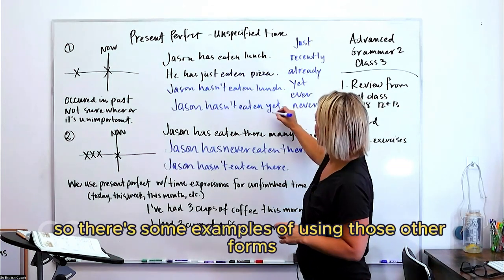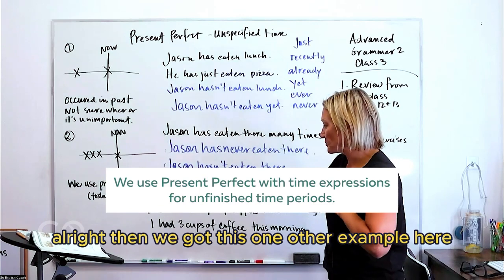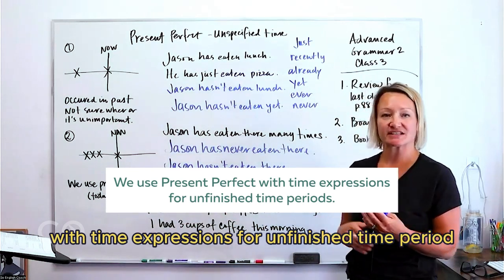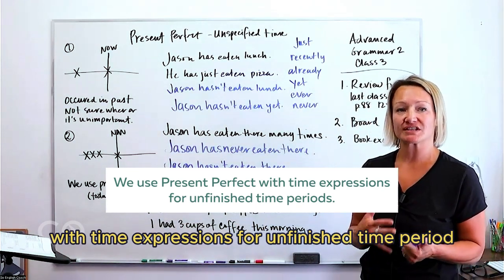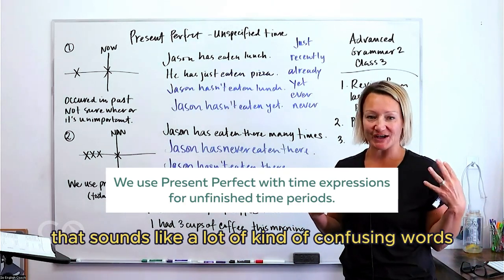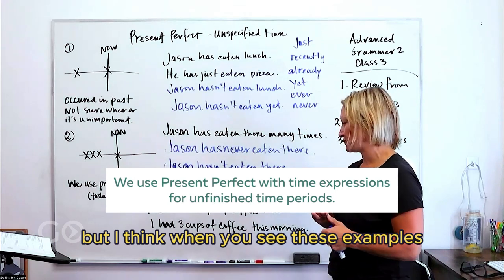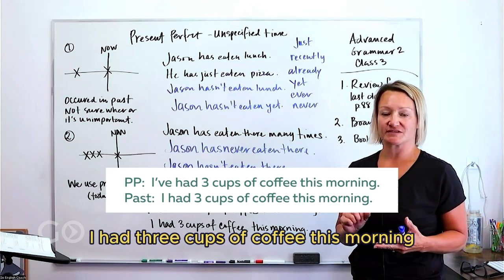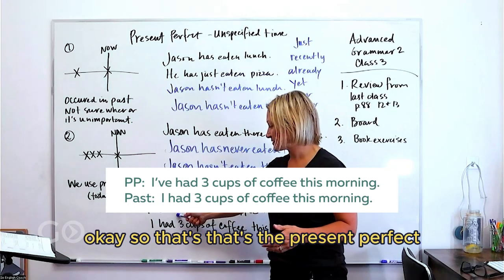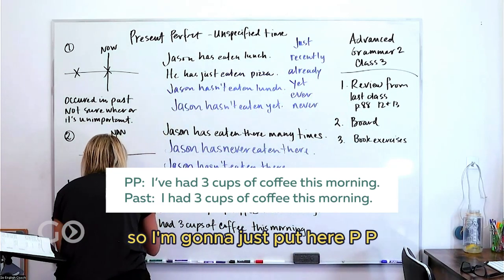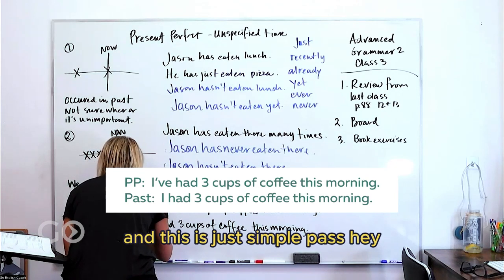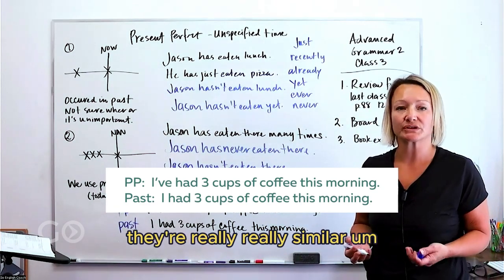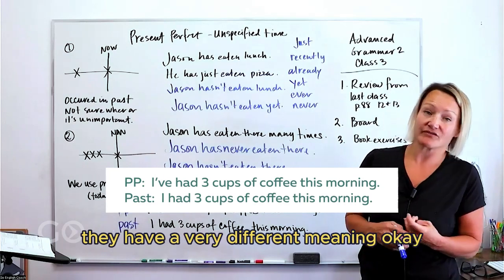All right, so there's some examples of using those other forms. All right, then we've got this one other example here. It says we use the present perfect with time expressions for unfinished time periods. That sounds like a lot of kind of confusing words, but I think when you see these examples you will understand. Okay, so the first example I have here, I've had three cups of coffee this morning. Okay, so that's the present perfect, so I'm going to just put here PP, and this is just simple past.